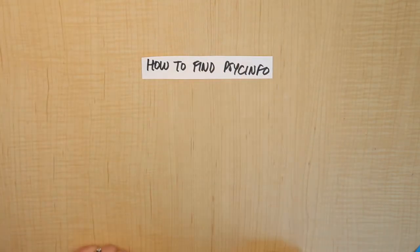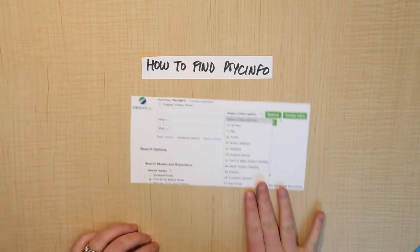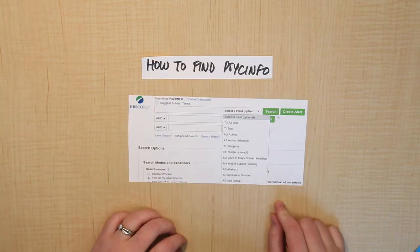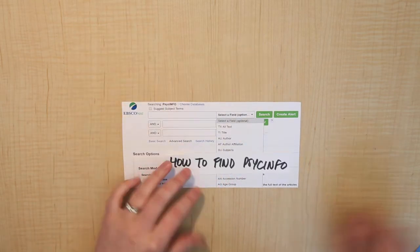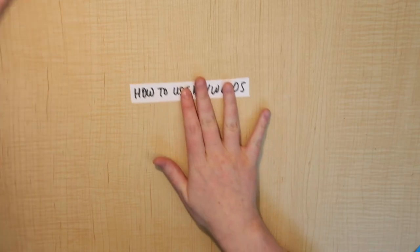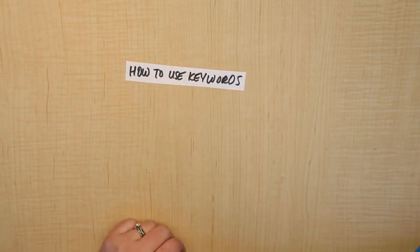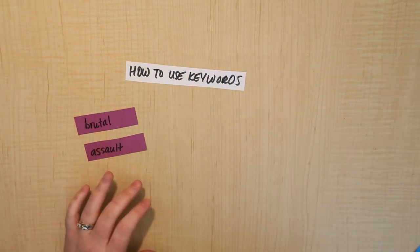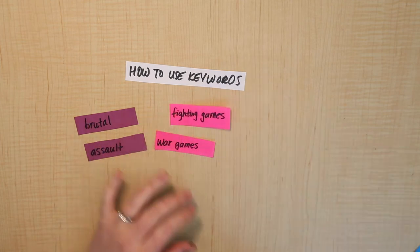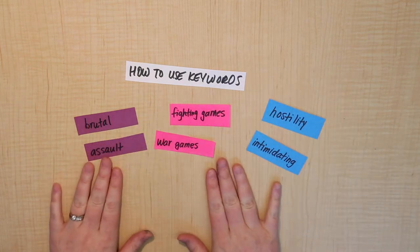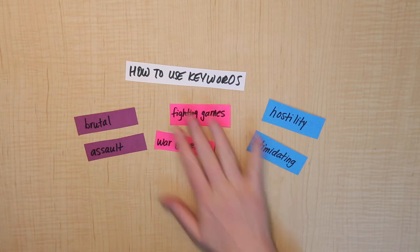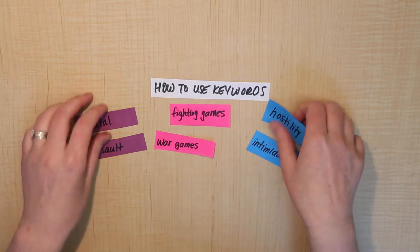We went to the library website and did how to find PsychInfo. Here's an example of what that looks like. After we went into PsychInfo, we learned about how to use keywords to search it. We had a whole bunch of different options for each of our main concepts, and we learned how to input them into PsychInfo.